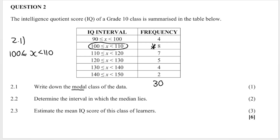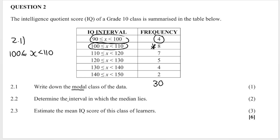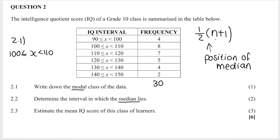The next question asks us to determine the interval in which the median lies. We don't have the entire data set — we only know how many learners fall within each interval. To find the median with grouped data, we use the formula: position = ½(n + 1). This tells us the position of the median, not the median itself. Since n = 30, we get ½(30 + 1) = 15.5.